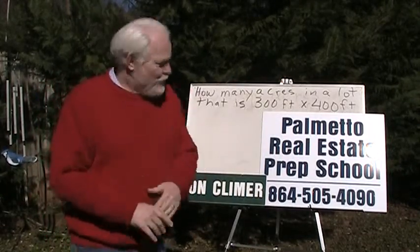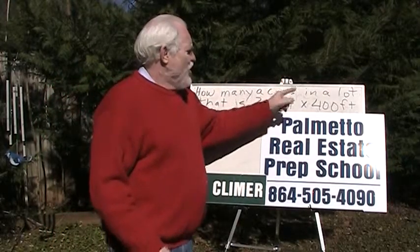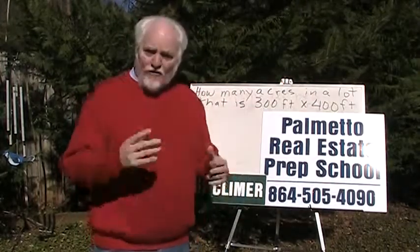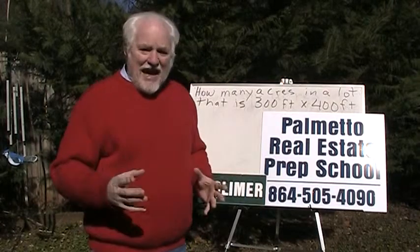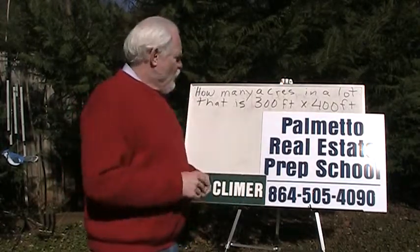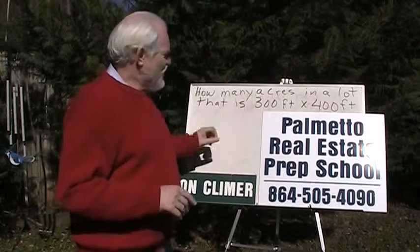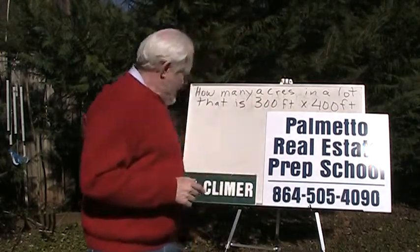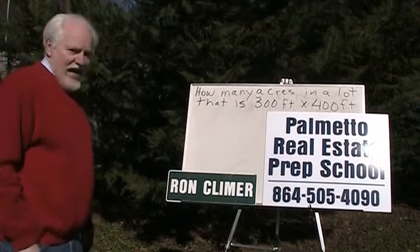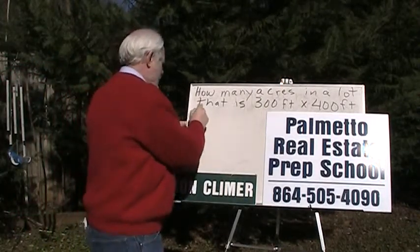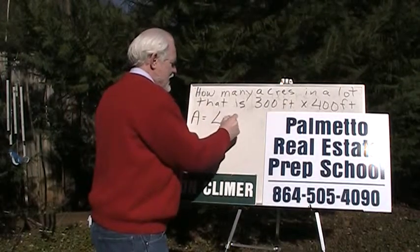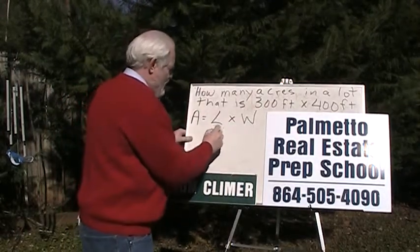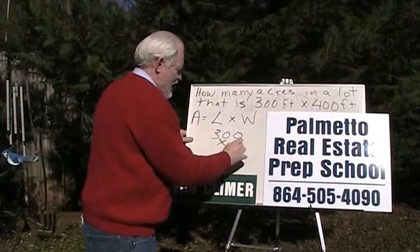Here's the question: how many acres are in a vacant lot that is 300 feet by 400 feet? The first thing we have to do is figure out how many square feet are in that lot. The formula for that is area equals length times width. So we have 300 feet by 400 feet — that's the size of the lot.